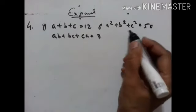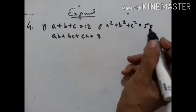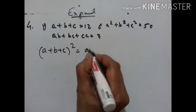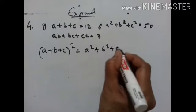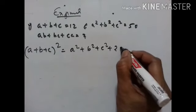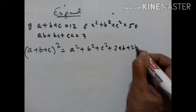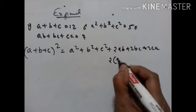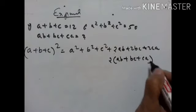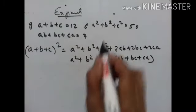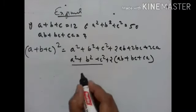Given a plus b plus c equals 12 and a square plus b square plus c square equals 50, we have to find the value of ab plus bc plus ca. Using the identity: (a plus b plus c)² equals a square plus b square plus c square plus 2 into ab plus bc plus ca. We take 2 outside, keeping ab plus bc plus ca inside the bracket.